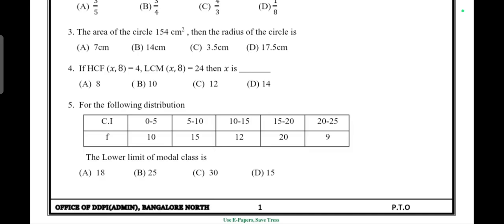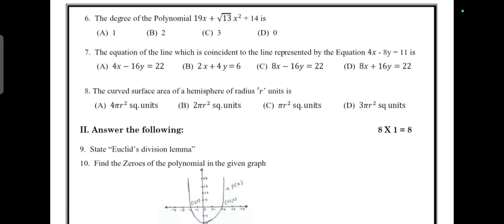Modal means its highest frequency, so the lower limit is 15. Next, the degree of polynomial 19x + √13x² + 14 is answer B, 2.